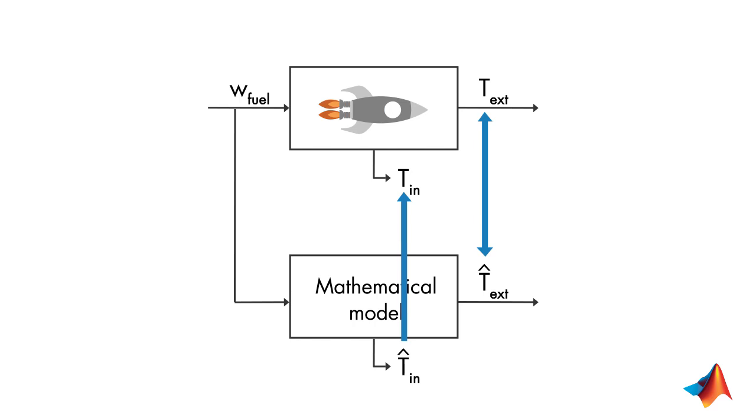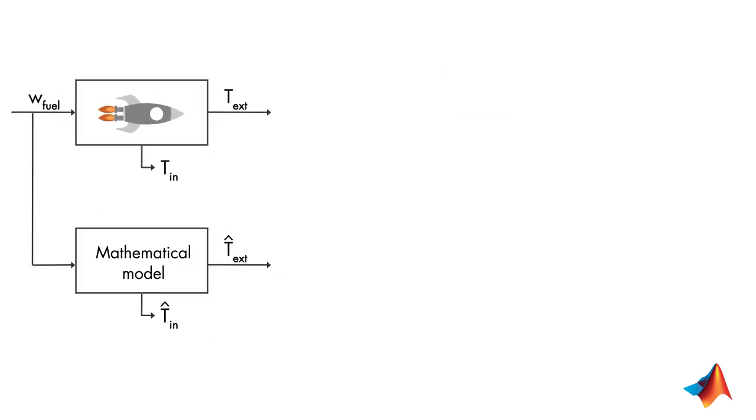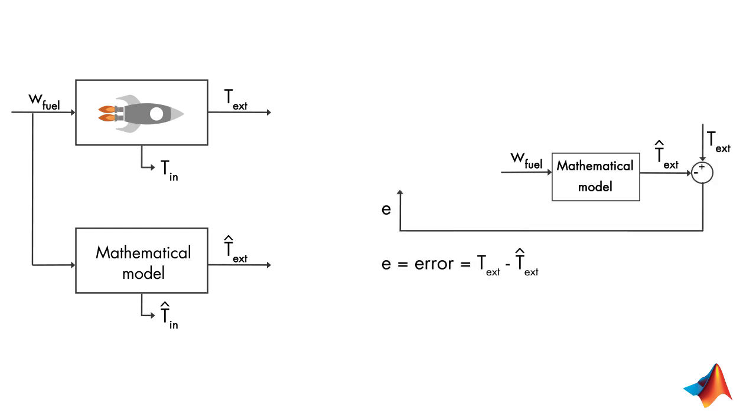What we're trying to do is minimize the difference between the estimated and measured external temperature. Does this sound familiar to you? Actually, we're talking about a feedback control system where we try to control the error between the measured and estimated external temperature at zero using a controller K.